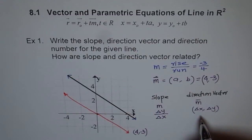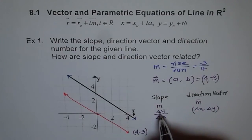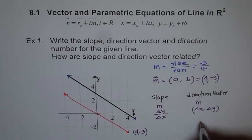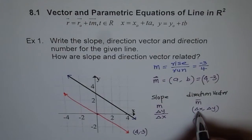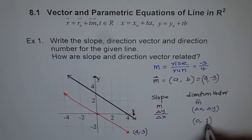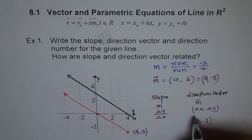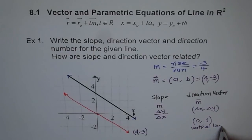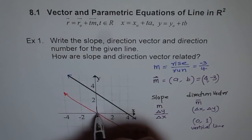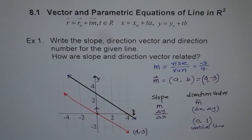One more important thing: if you have to represent a vertical line, you cannot do it with slope, because slope requires dividing by the change in x, which is 0. However, you can represent a vertical line with a direction vector. For a vertical line, change in x is 0 and change in y could be anything — for simplicity we take 1. So the direction vector for a vertical line is (0, 1). You cannot represent this vertical line with slope because you cannot divide by 0.